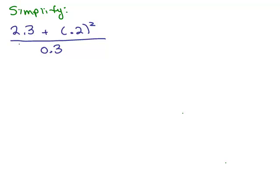Here's our first problem. We want to simplify this fraction. Using the order of operations when you're simplifying fractions, you first have to simplify the numerator and simplify the denominator. The denominator is simplified but the numerator has an addition and an exponent, so we do our exponent first.